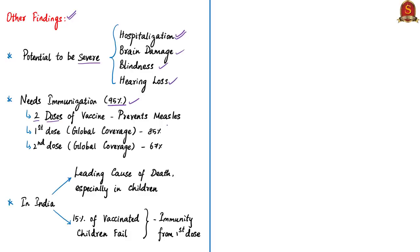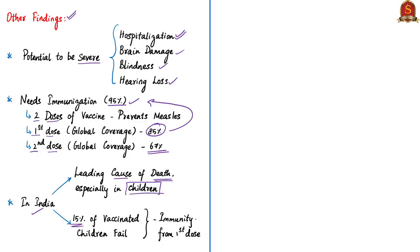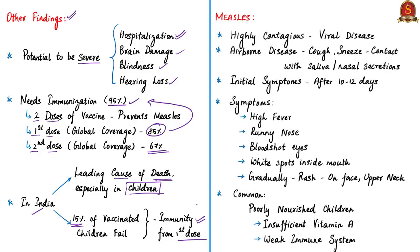For several years, global coverage with the first dose of measles vaccine has stalled at 85%, short of the 95% needed to prevent outbreaks, leaving many communities at risk. Second dose coverage, even though increasing, still stands at 67%. India is at risk as measles is still one of the leading causes of death in young children. About 15% of vaccinated children fail to develop immunity from the first dose, meaning if only 80% are fully immunized, an outbreak is likely. Thus, there is a need to ensure herd immunity.